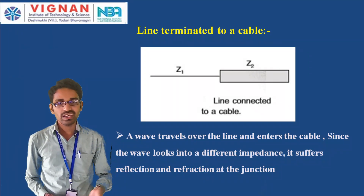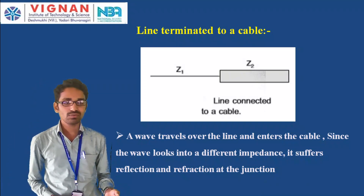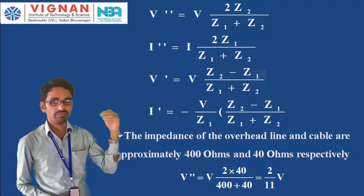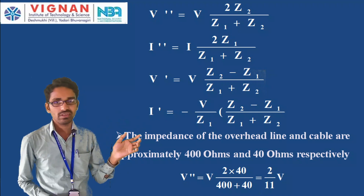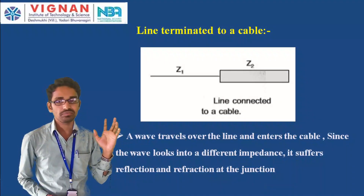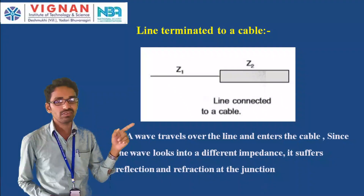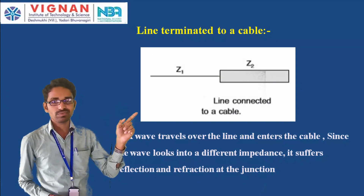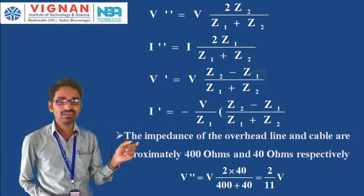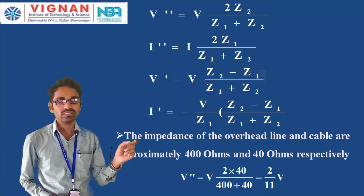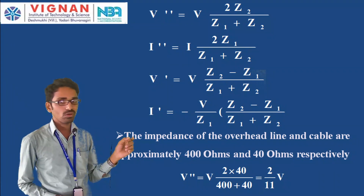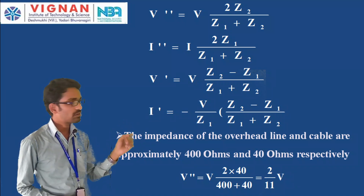At the junction, the refracted voltage V'' equals V × 2Z₂/(Z₁+Z₂), the refracted current I'' equals I × 2Z₁/(Z₁+Z₂), the reflected voltage V' equals V × (Z₂−Z₁)/(Z₁+Z₂), and the reflected current I' equals −(V/Z₁) × (Z₂−Z₁)/(Z₁+Z₂), where Z₁ is the surge impedance of the transmission line and Z₂ is the surge impedance of the underground cable.